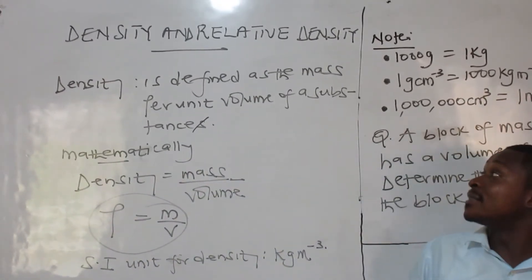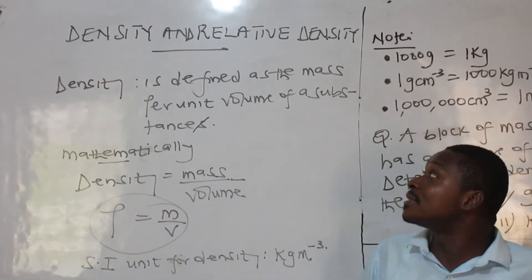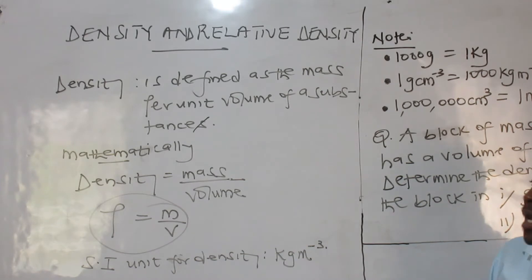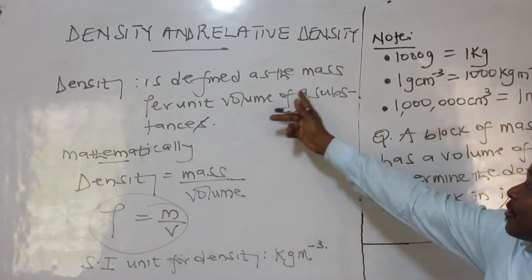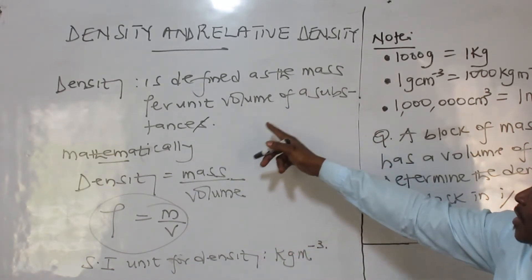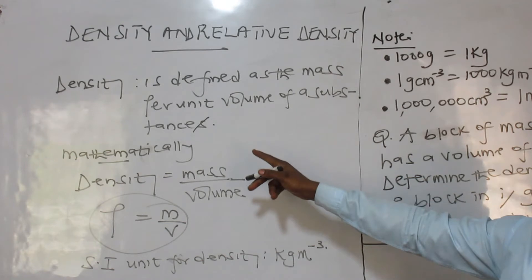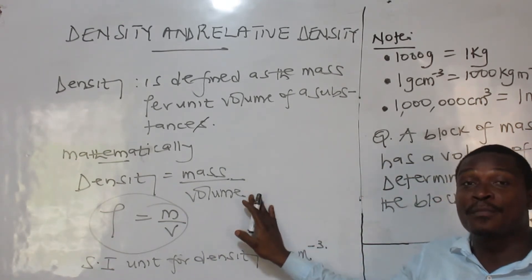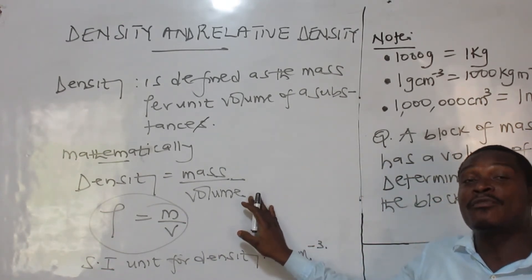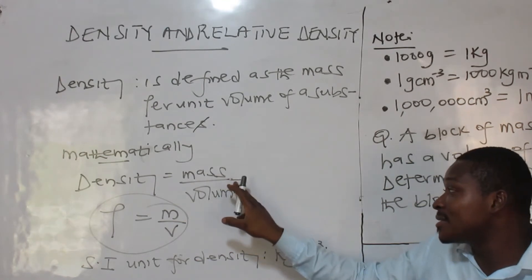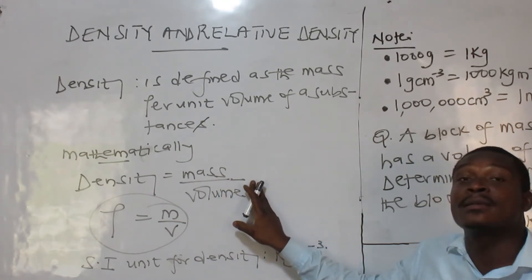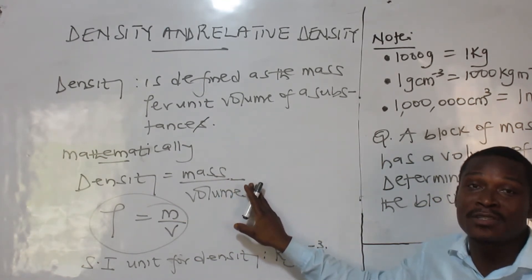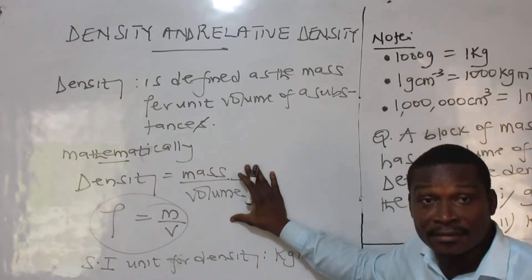Density and relative density. We will first start with density. What is density? It is defined as the mass per unit volume of a substance. So mathematically, density equals mass over volume. If you define density in this way, it is still correct. We are doing mathematics, not English, so it is accepted.